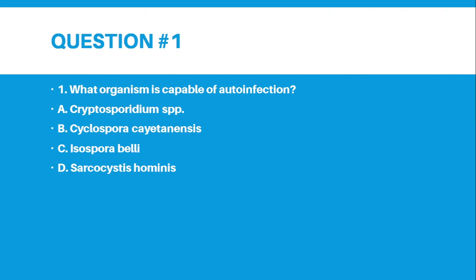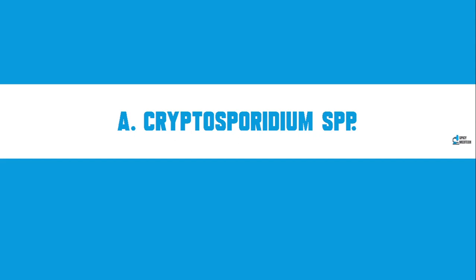What organism is capable of auto-infection? Letter A, Cryptosporidium species; B, Cyclospora cayetanensis; C, Isospora belli; or D, Sarcocystis hominis. And the answer for number 1 is letter A, Cryptosporidium species.